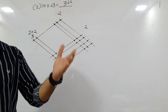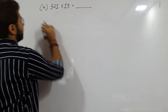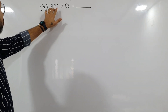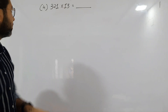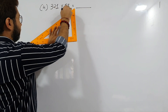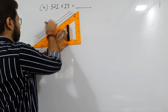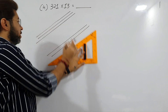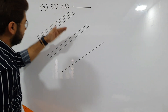You all love this, right? Now let's take a more complex example with three digits: 321 cross 13 — that's three hundred twenty-one cross thirteen. Apply the same method. First digit is 3, so draw three lines: one, two, three. Second digit is 2, so draw two lines. The last digit is 1 — so I've drawn lines for 3, 2, 1.